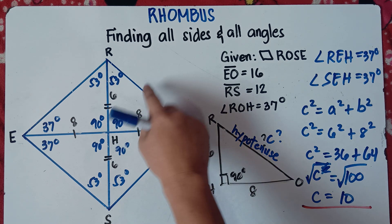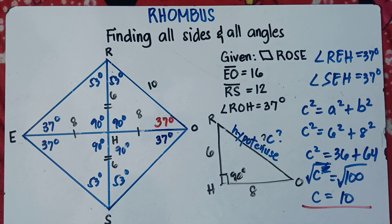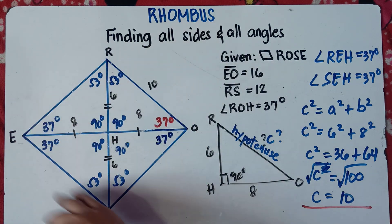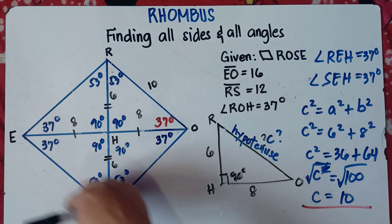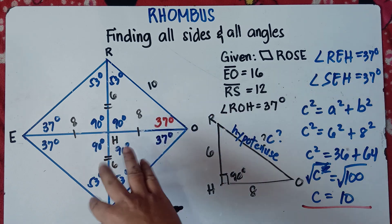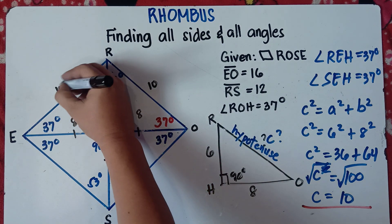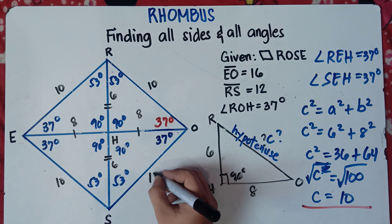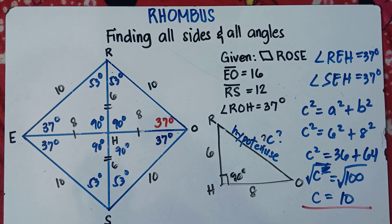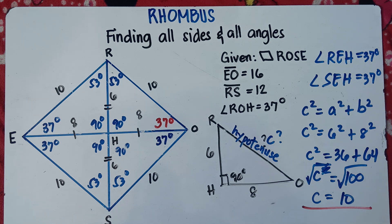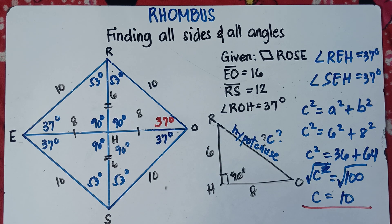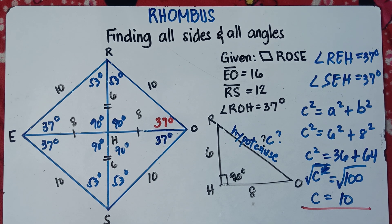So line segment RO equals 10. And since all sides of a rhombus are congruent, all four sides equal 10. That's it — we're done finding all sides and all angles of the rhombus. I hope you understand this. If you like this video, don't forget to like, share, and subscribe. Share it with your friends and classmates so we can help more students who are struggling with math. This is Teacher MJ. Have a great day. Goodbye!